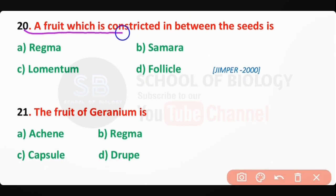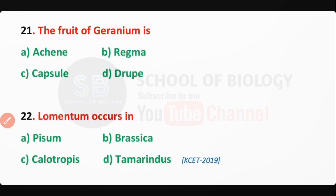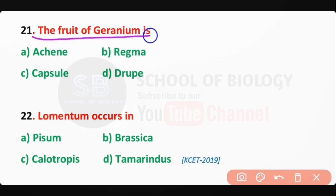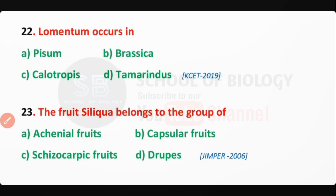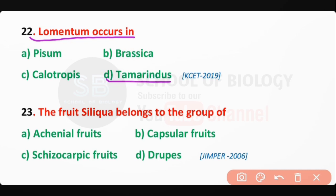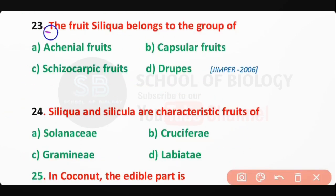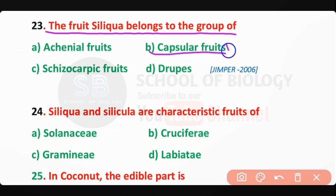Q20: A fruit which is constricted between the seeds is known as a lomentum — correct answer is option C. Q21: Lomentum is a fruit that occurs in Tamarindus — correct answer is option D. Q23: Fruit siliqua belongs to the group of capsular fruits — correct answer is option B.